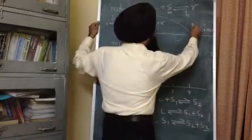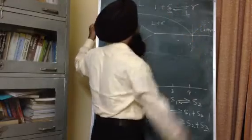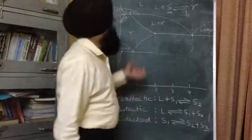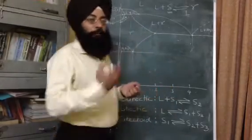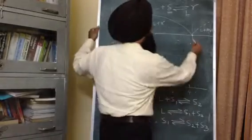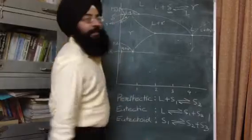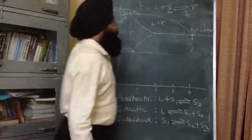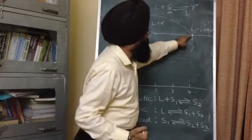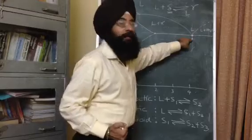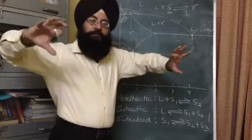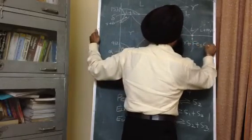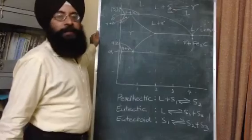Next, coming to the eutectic reaction. We analyze an alloy with a composition near 4 percent carbon at a temperature of approximately 1140°C. Above this point the phase present is liquid. As soon as you decrease the temperature below this point, this liquid gets converted into two different solids.